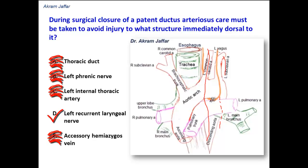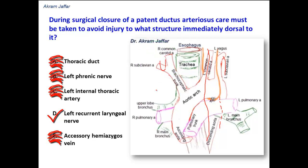It is only the left recurrent laryngeal nerve that is found in the mediastinum, because the right recurrent laryngeal nerve recurs in the root of the neck around the right subclavian artery and does not descend into the superior mediastinum.